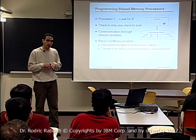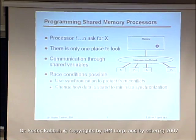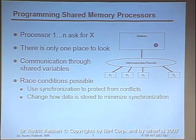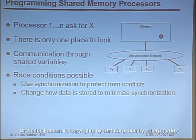In shared memory processors, you have n processors connected to a single memory. If one processor asks for the value stored at address x, everybody knows where to look because there's only one address x. Different processors can communicate through shared variables, and you need things like locking to avoid race conditions or erroneous computation.